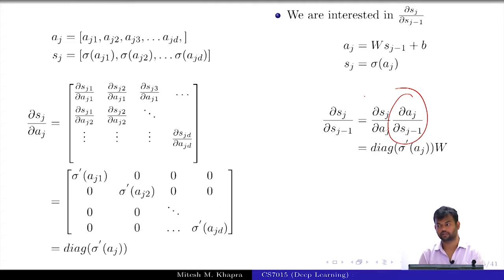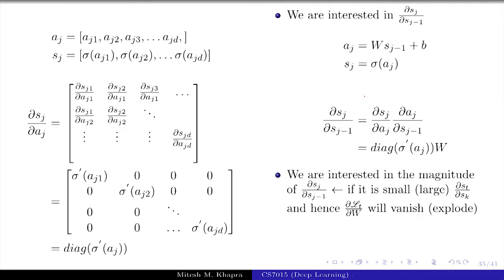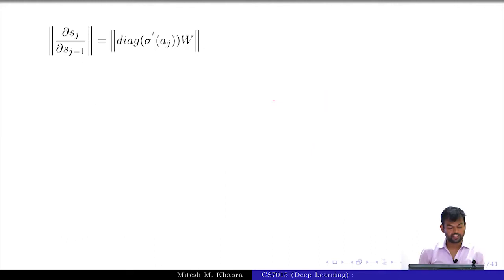This is a diagonal matrix which I have and what is ∂a_j/∂s_{j-1}? Scalar vector matrix. Scalar. Matrix. Which matrix? W. So, now for some reason I am interested in the magnitude of this. Why am I interested in the magnitude of this? For some reason I am interested. Let us see why it will become clear, but for some reason I am interested in and here's how I will write the magnitude of this. So, this is the norm that I am interested in.